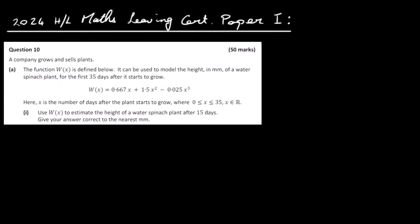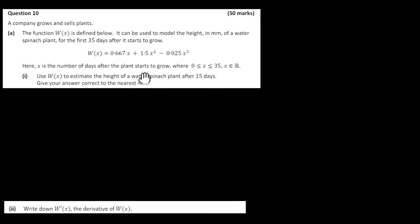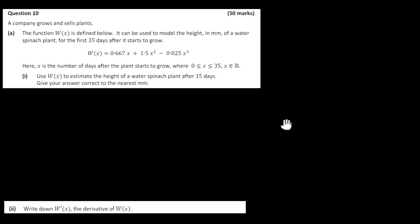Let's have a look at the 2024 Higher Level Maths Leaving Cert Paper 1, question 10. We have a company which grows and sells plants. The function W of X is defined below — it can be used to model the height in millimetres of water spinach plants for the first 35 days after it starts to grow. W of X is equal to 0.667X plus 1.5X squared minus 0.025X cubed, where X is the number of days after the plant starts to grow, with X between 0 and 35.